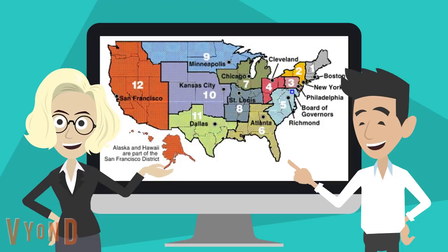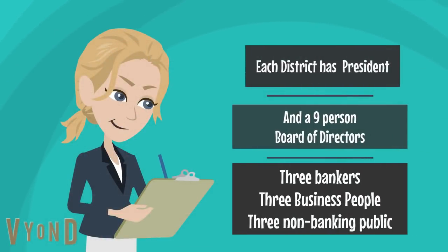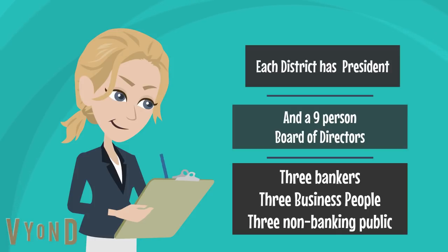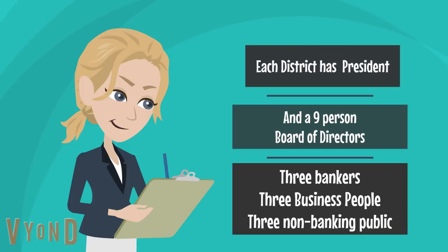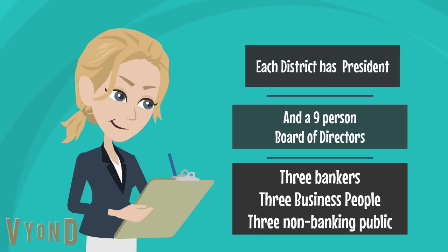And no District 13 — no Katniss Everdeen. Each district has a president and a nine-person board of directors. So you've got seven people in Washington and essentially 10 people per district running that district, across 12 districts — that's 127 people right there. There are lots and lots of people involved in this.